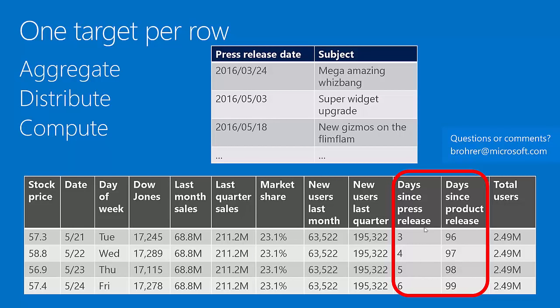Another thing we find ourselves doing quite often is computing. For instance, days since a press release or days since a product release — our data may be stored as a date and the name of the press release. To find days since the press release, we take the date of the last press release and today's date and subtract them.